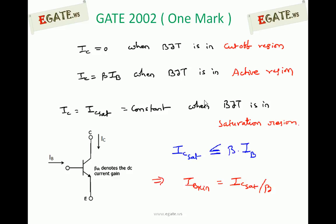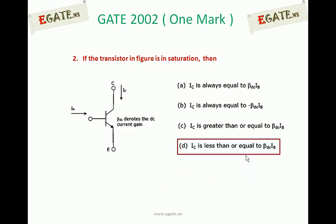IB minimum is equal to IC saturation divided by beta. In the saturation region, you may apply any base current, but the collector current will not equal beta times IB because the collector current has been saturated. Therefore, IC saturation is less than or equal to beta times IB in saturation, and the correct option is D: IC is less than or equal to beta times IB.